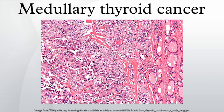Depending on source, the overall 5-year survival rate for medullary thyroid cancer is 80%, 83%, or 86%, and the 10-year survival rate is 75%. By overall cancer staging into stages I to IV, the 5-year survival rate is 100% at stage I, 98% at stage II, 81% at stage III, and 28% at stage IV. The prognosis of MTC is poorer than that of follicular and papillary thyroid cancer when it has metastasized beyond the thyroid gland.